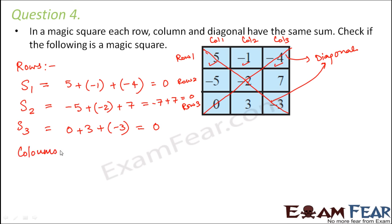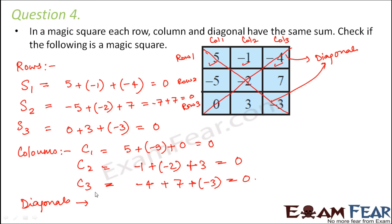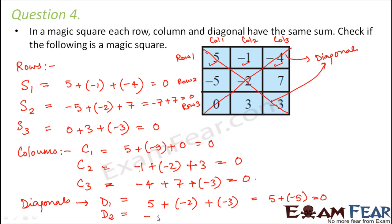Now the columns. Column one: 5 + (−5) + 0 = 0. Column two: (−1) + (−2) + 3 = 0. Column three: (−4) + 7 + (−3) = 0. For the diagonals: diagonal one is 5 + (−2) + (−3) = 5 + (−5) = 0. Diagonal two is (−4) + (−2) + 0 = −6.